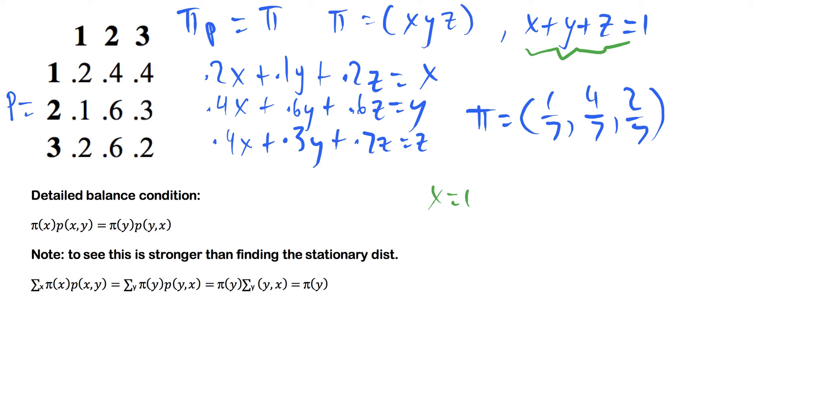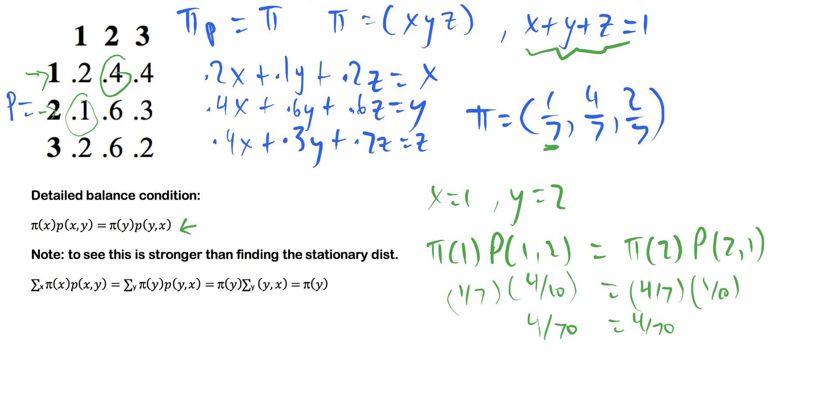So if we let x equal one and y equal two, then what we're trying to find here is π of one, just following this definition right here, p of one to two should equal π of two from p of two to one. So we're going to look at our matrix here and we want to go from one to two and that's point four. So here we have four tenths. We know what π of one is. It's right here. This is one seventh and we want to see if these equal each other. So our π of two is four sevenths. And to get from state two back to state one, we want to look here now and get back to state one. We have a tenth of a chance. So this is one over 10 and this happens to equal four over 70, which equals four over 70. So for this first case it works. I'm going to scroll down and continue doing these.